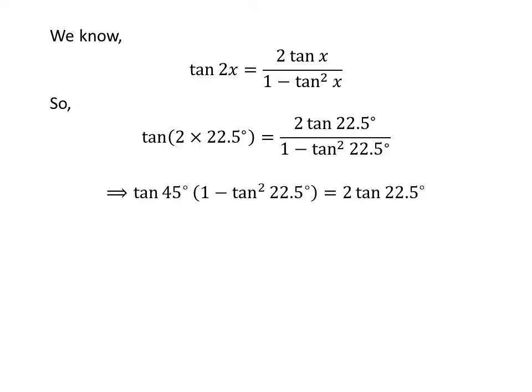We know 2 times 22.5 degrees is equal to 45 degrees. Shifting 1 minus square of tangent of 22.5 degrees from the denominator of the right-hand side to the left-hand side gives us: tangent of 45 degrees times 1 minus square of tangent of 22.5 degrees is equal to 2 times tangent of 22.5 degrees.